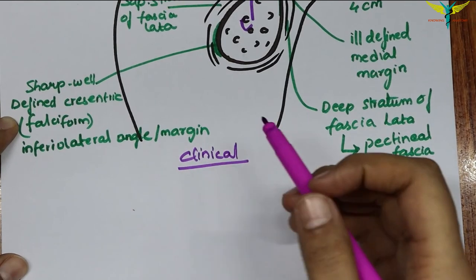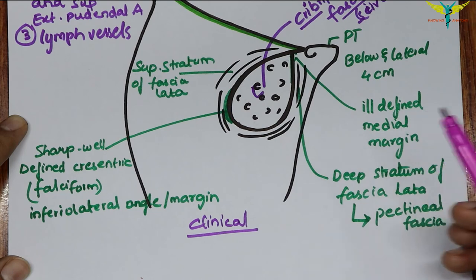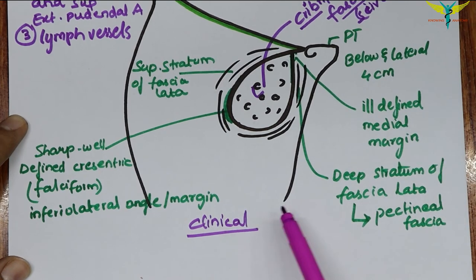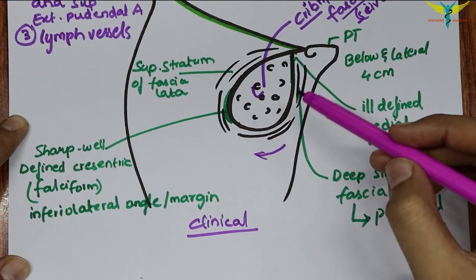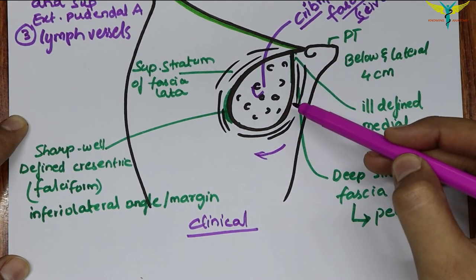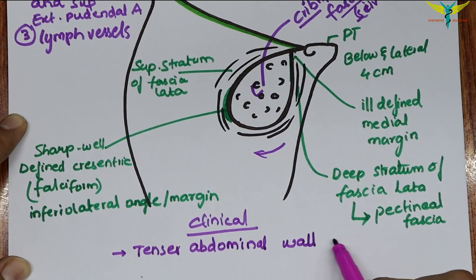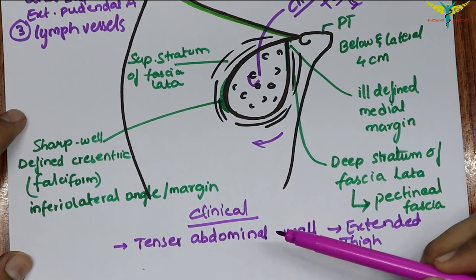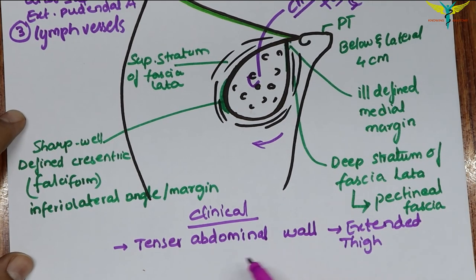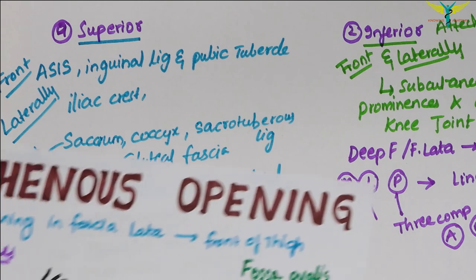From a clinical point of view, the fascia lata is attached to the undersurface of the inguinal ligament. When the thigh is extended, it pulls the abdominal wall downwards and makes it tense. In order to relax the abdomen, the patient is asked to draw the legs upward to overcome the pull of the fascia lata on the abdominal wall.